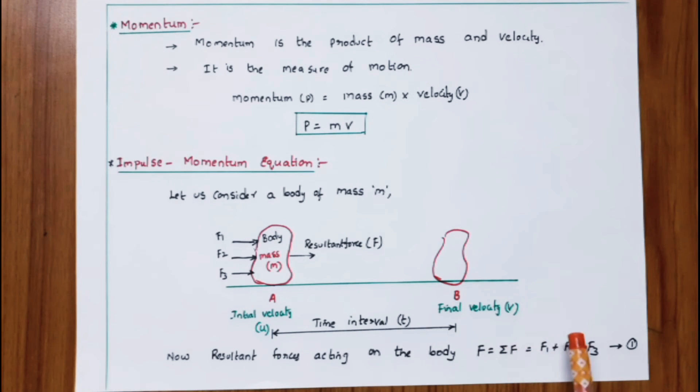The resultant force acting on the body F equals the summation of all forces. Adding all forces F₁, F₂, F₃, we get F = ΣF = F₁ + F₂ + F₃. This is equation number one.